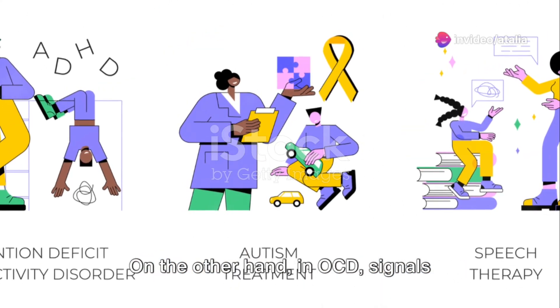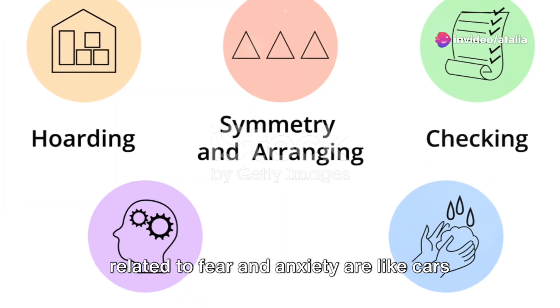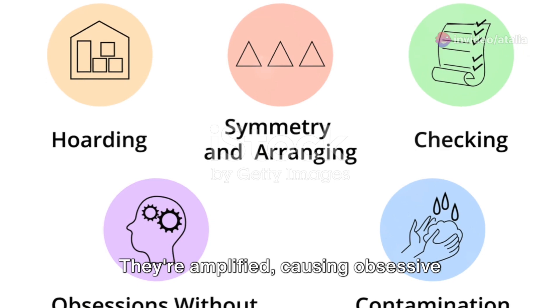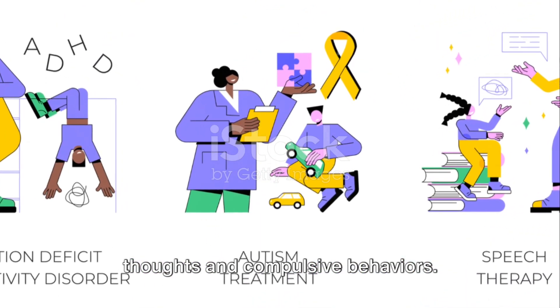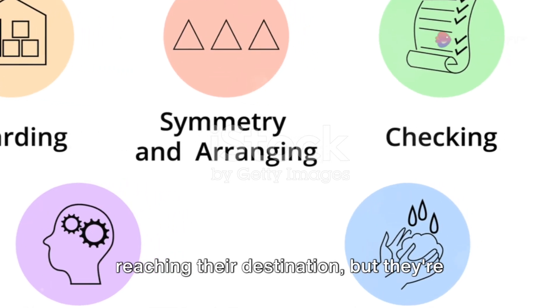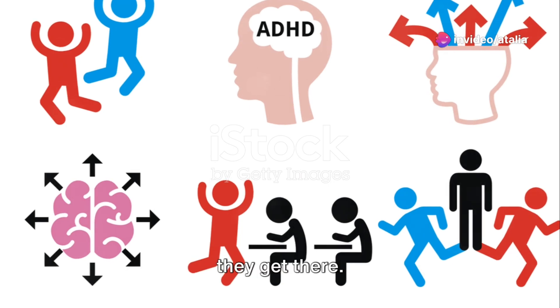On the other hand, in OCD, signals related to fear and anxiety are like cars with turbocharged engines. They're amplified, causing obsessive thoughts and compulsive behaviors. It's as if these cars are not just reaching their destination, but they're doing burnouts in the parking lot when they get there.